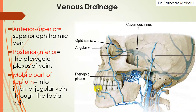Now the venous drainage, again divided into quadrants. The anterior superior part drains into the superior ophthalmic vein. The posterior inferior part drains into the pterygoid plexus. The mobile part drains into the internal jugular vein through the facial vein.